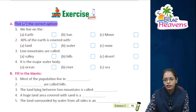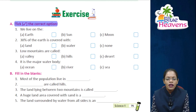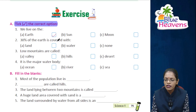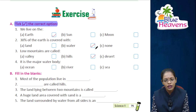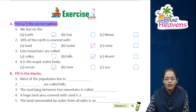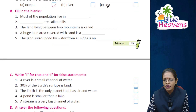Exercise A — tick the correct option. We live on the Earth: answer is A. 30% of the Earth is covered with water: answer is B. Low mountains are called hills: answer is B. The major water body is ocean: answer is ocean.